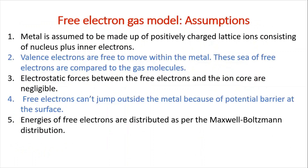This free electron gas model is based on certain assumptions. First, metal is assumed to be made up of positively charged lattice ions consisting of nucleus plus inner electrons. Second, valence electrons are free to move within the metal, and this sea of free electrons is compared to gas molecules. Third, electrostatic forces between the free electrons and the ion core are negligible. Fourth, free electrons cannot jump outside the metal because of the potential barrier at the surface. Fifth, energies of the free electrons are distributed as per the Maxwell-Boltzmann distribution.